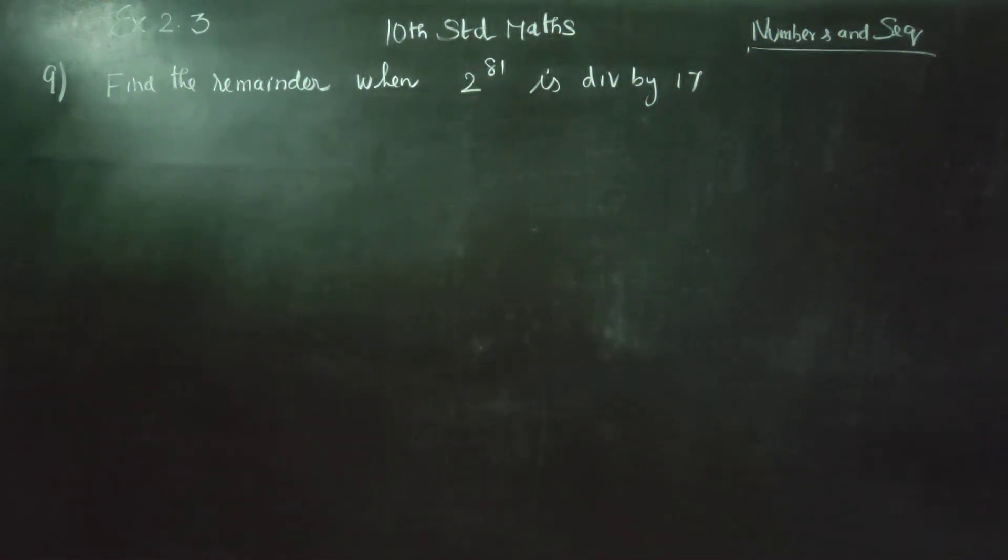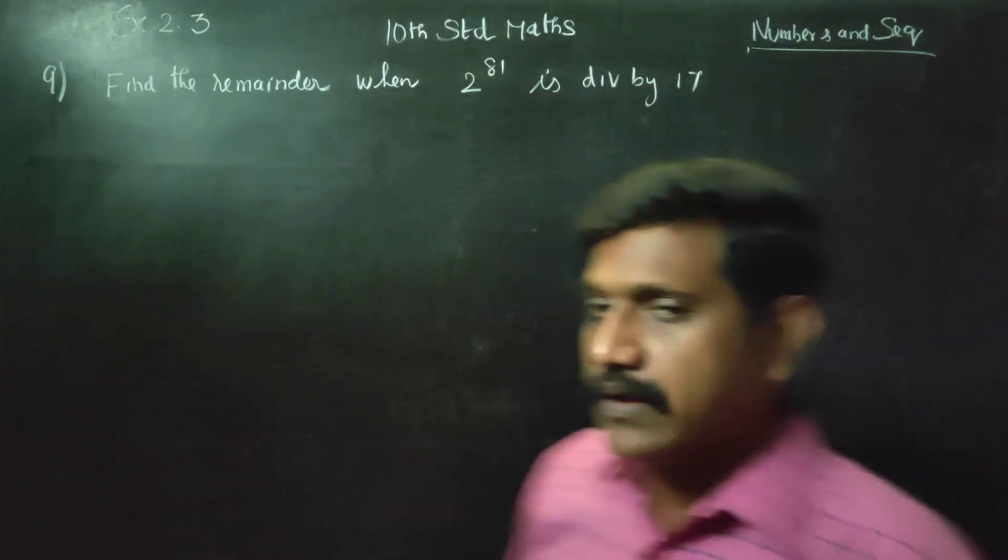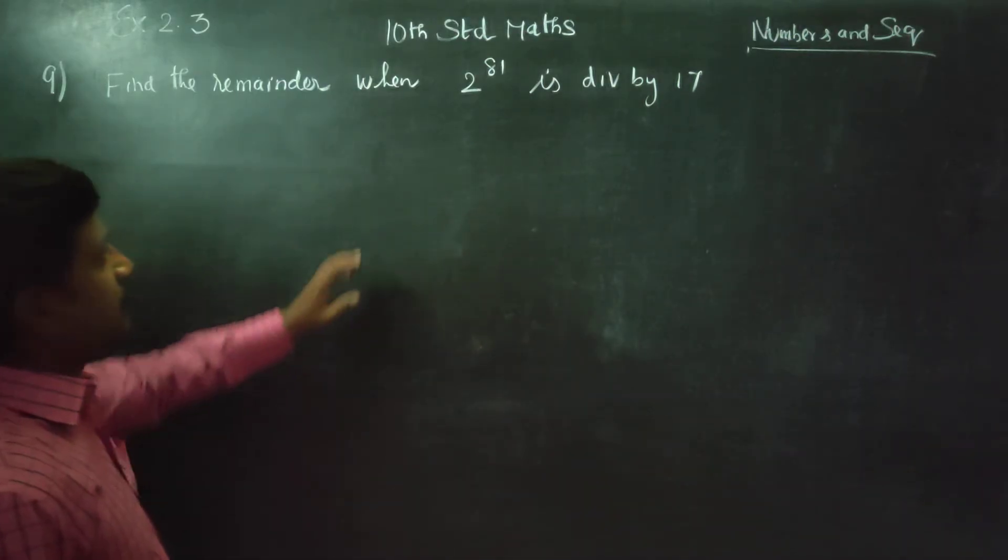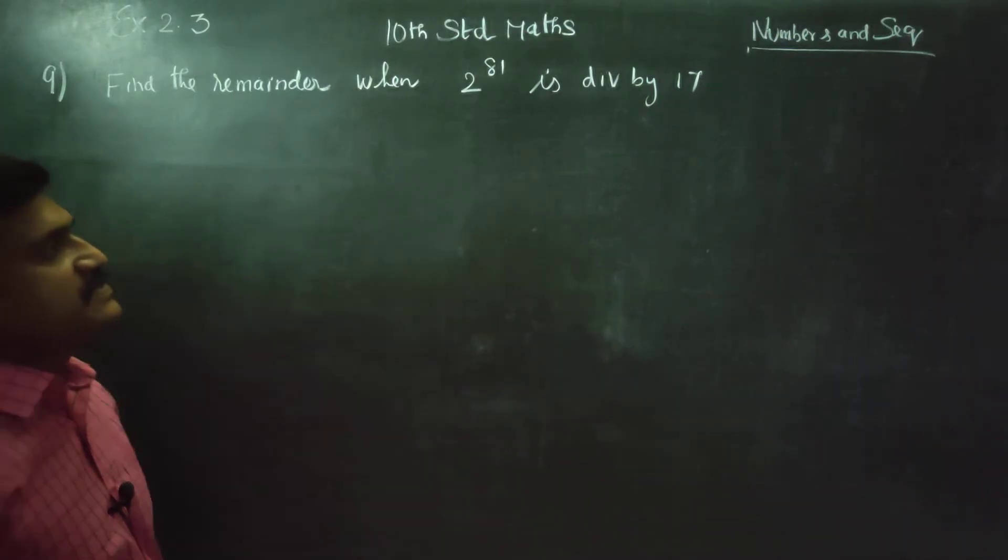Hello 10th standard students, I am Metro Karunagaran. In exercise number 2.3, find the remainder when 2 power 81 is divisible by 17.